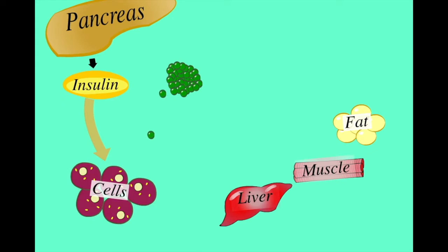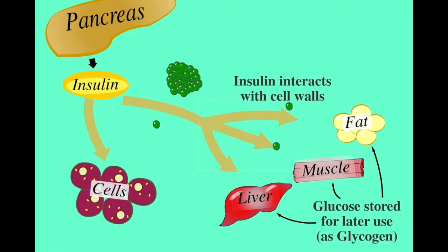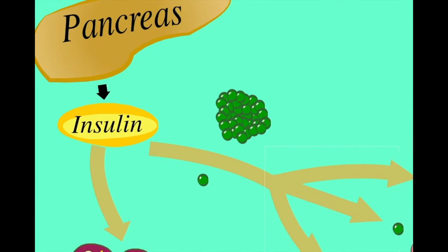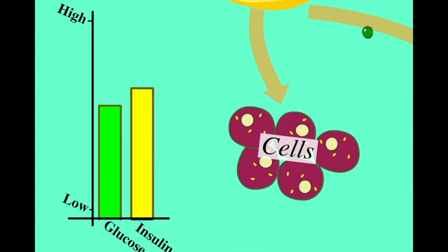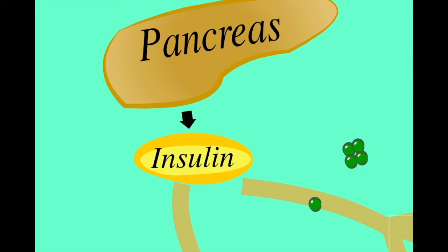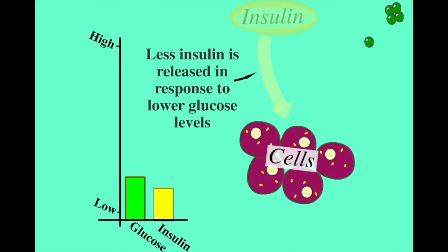The high insulin levels also promote increased storage of glucose in the liver, muscle and fat cells. Glucose levels in the blood will begin to reduce as the sugar is taken into the body's cells. The pancreas, detecting this change, will also reduce the rate of insulin secretion, ensuring the supply of glucose is not used up too quickly.